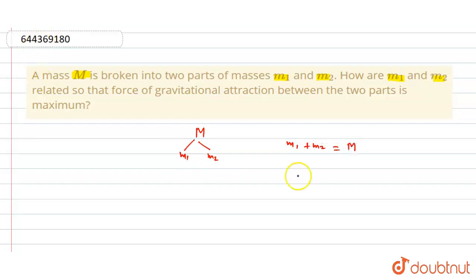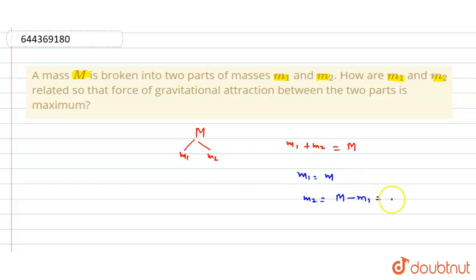Now let M1 equal to a small m, therefore M2 is equal to capital M minus M1, which means M2 equals capital M minus small m.